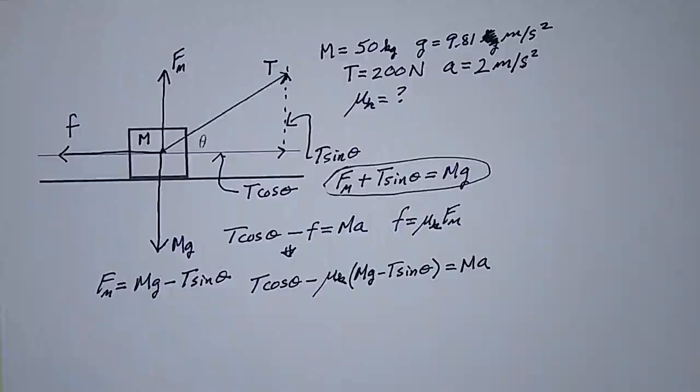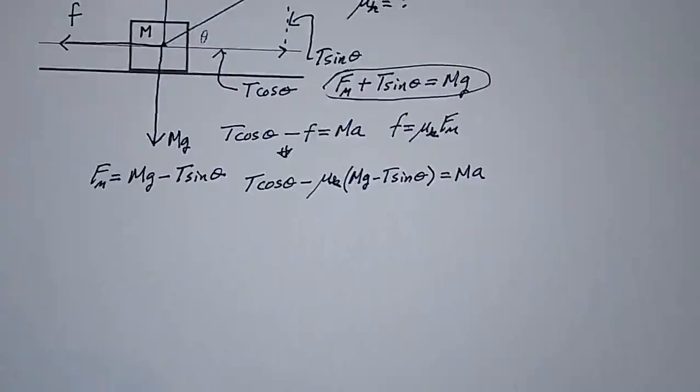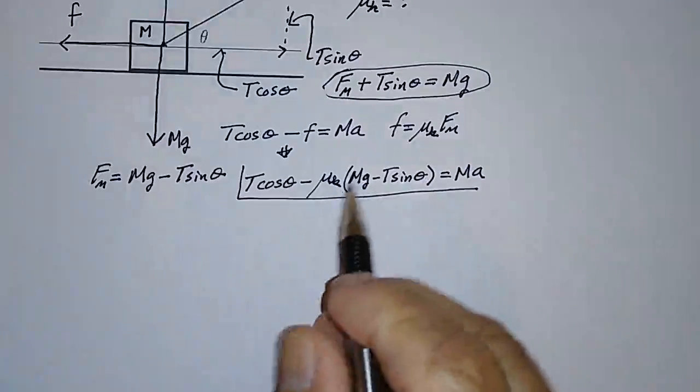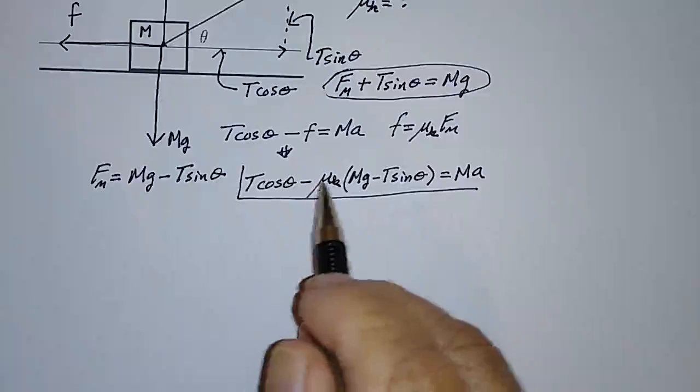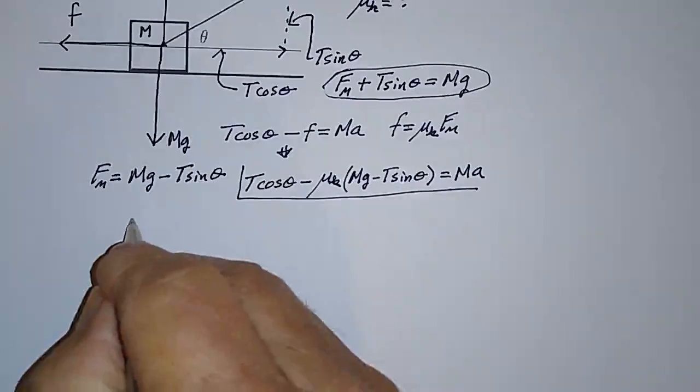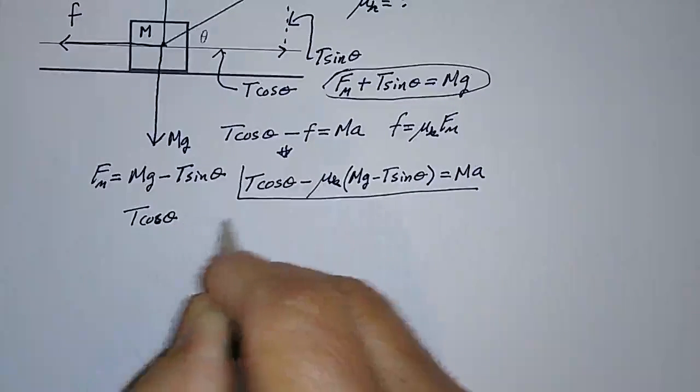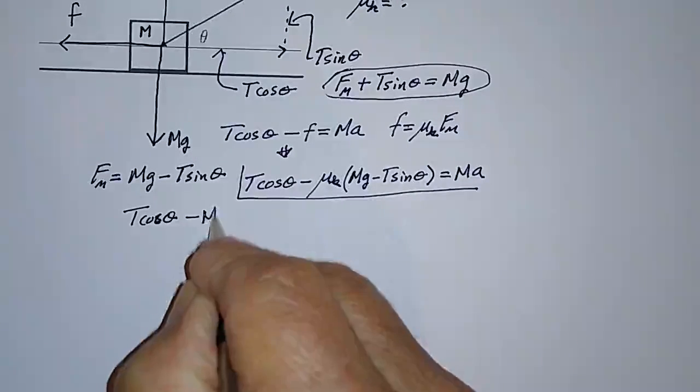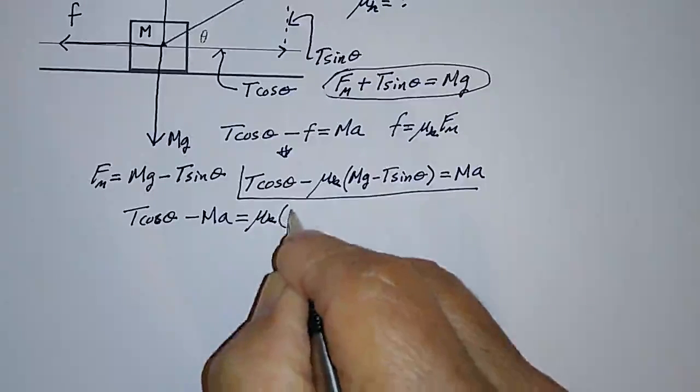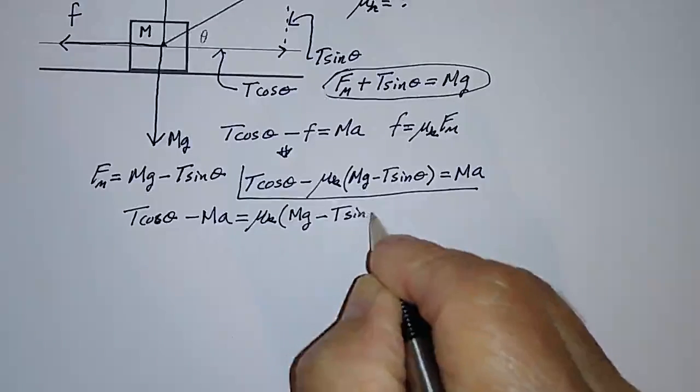So what we want to do is solve this equation for mu sub k. Let me move it up a little bit so I give myself a little more room. We want to solve it for mu sub k. So I'll move all this to the other side and write T cosine theta.